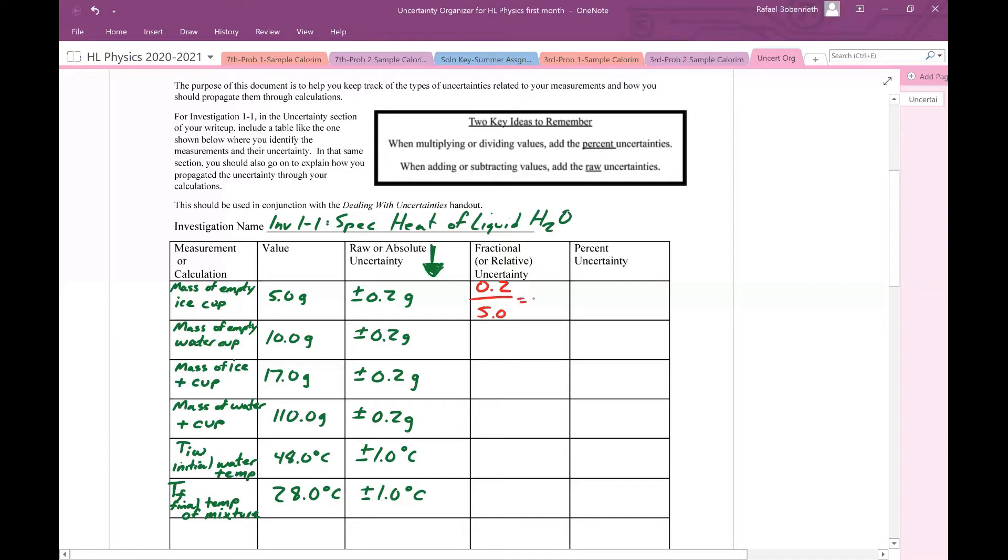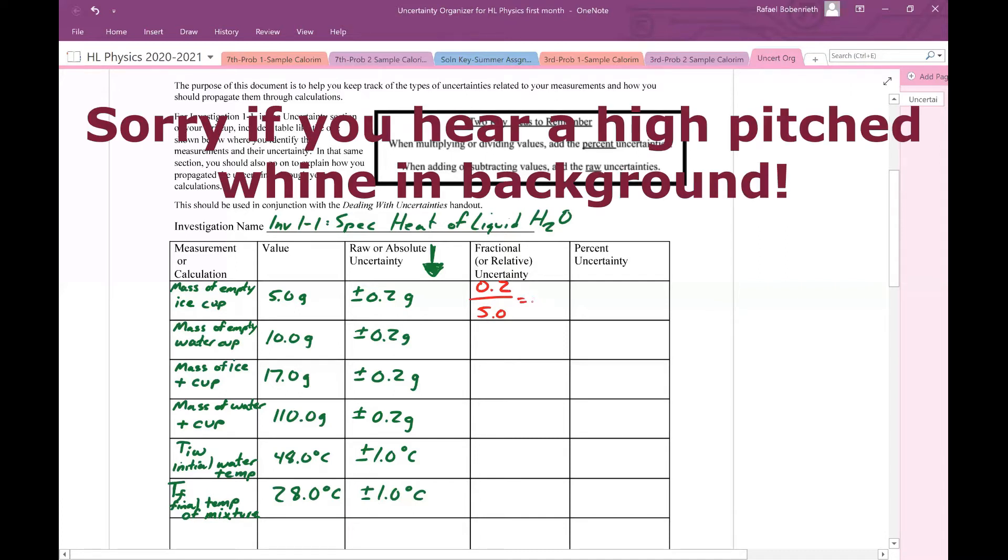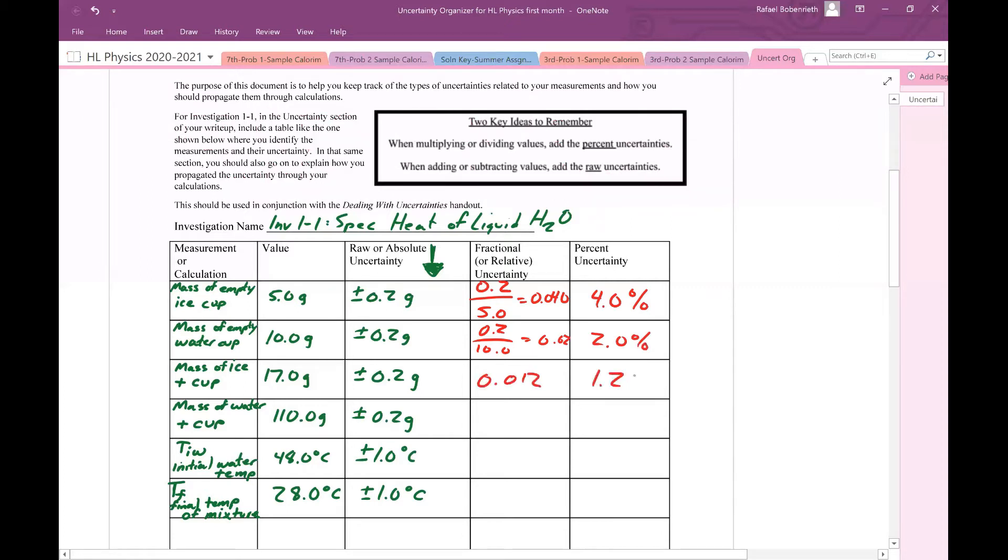So in this case, this would be 0.2 divided by 5.0, which comes out to be 0.040 or 4.0%. We do a similar sort of activity for the other ones. 0.2 divided by 10.0, that's 0.020 or 2.0%. Go on down the line. I'm going to skip ahead here. You can pause the video if you need more time to do this for your own data.